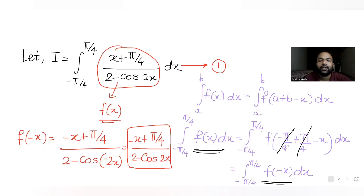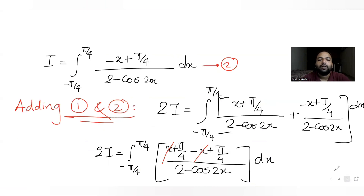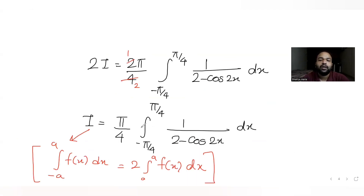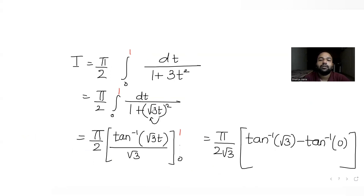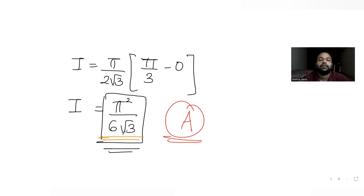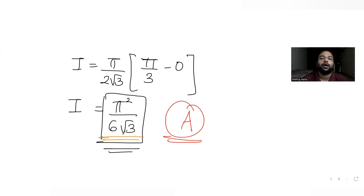In summary, we used two properties of definite integrals: first, ∫[a to b] f(x)dx = ∫[a to b] f(a+b-x)dx; second, ∫[-a to a] f(x)dx = 2∫[0 to a] f(x)dx. After adding the two expressions for I and simplifying, we substituted t = tanx to evaluate the final integral and got the answer. I hope you understood how to solve this type of question. See you tomorrow with another question. Stay tuned and do like, share, and subscribe to my channel!